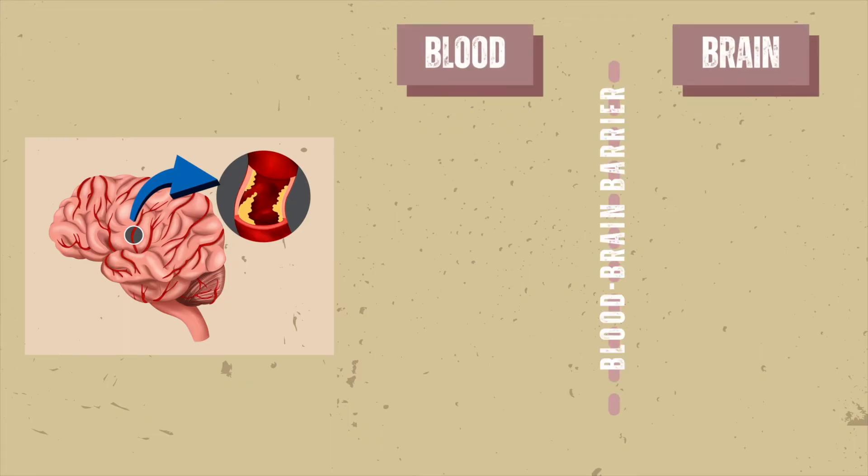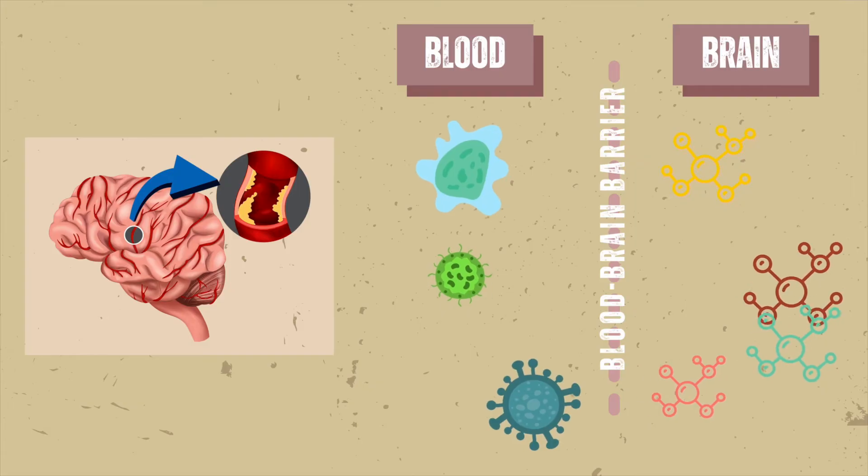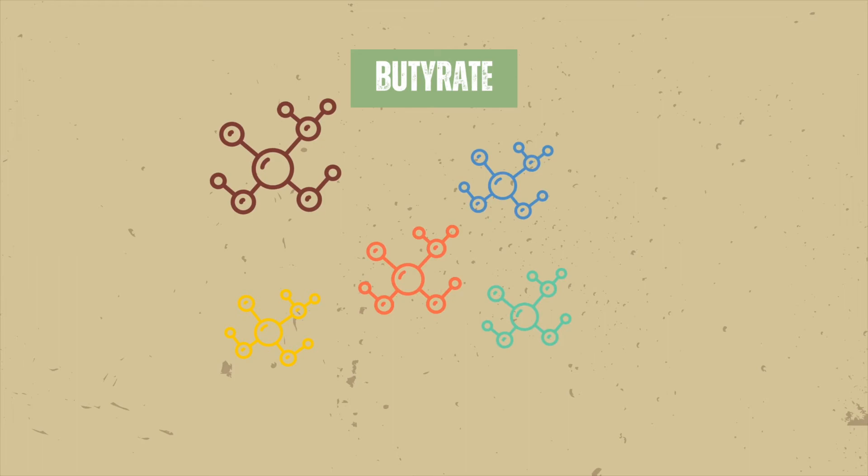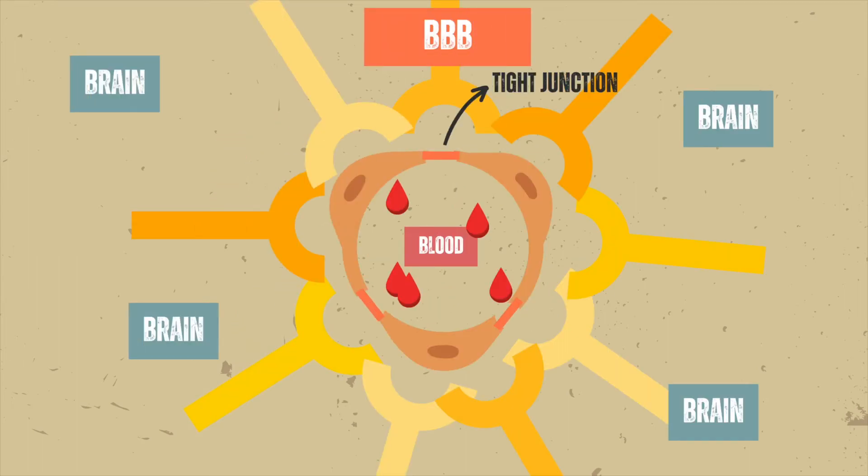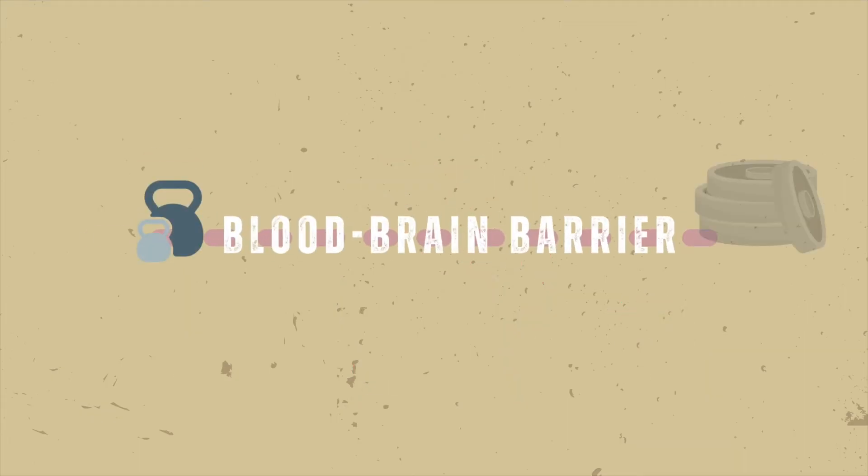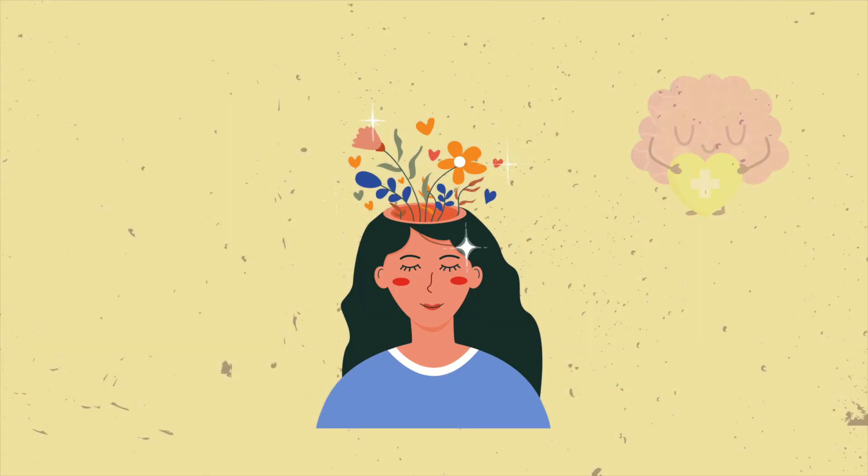The blood-brain barrier, or BBB, is a selective permeability barrier that protects the brain from potentially harmful substances in the blood while allowing essential nutrients to pass through. Short-chain fatty acids like butyrate play a critical role in maintaining the integrity of the BBB. Butyrate has been shown to enhance the expression of tight junction proteins that form the barrier, thereby preventing unwanted molecules from entering the brain. By strengthening the BBB, these compounds help protect the brain from toxins and pathogens, which is crucial for maintaining overall brain health and preventing neurological disorders.